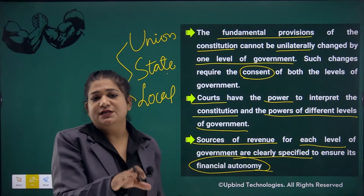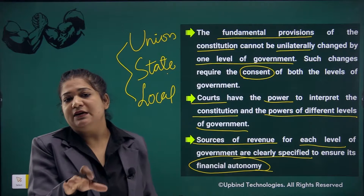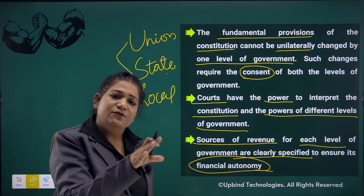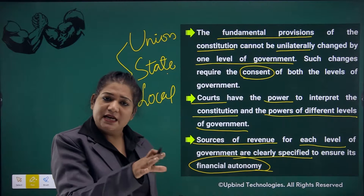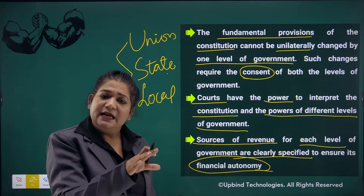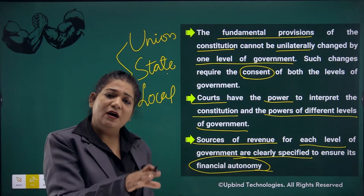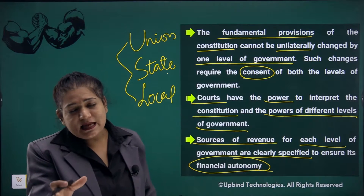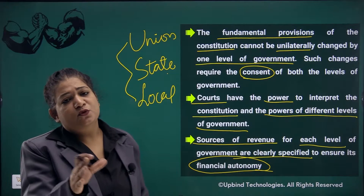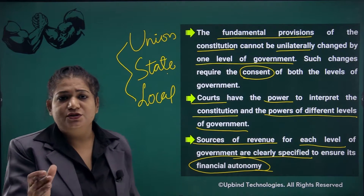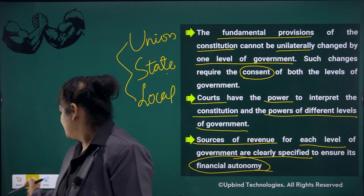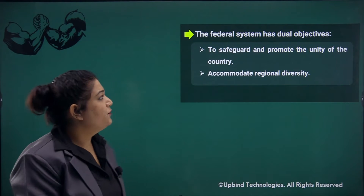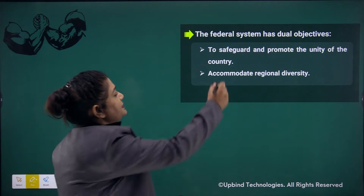There is different legislation at the state level, at the union level, and at the local level, and this is applicable to the executive and judiciary also. Now come to the point — that is the federal system.